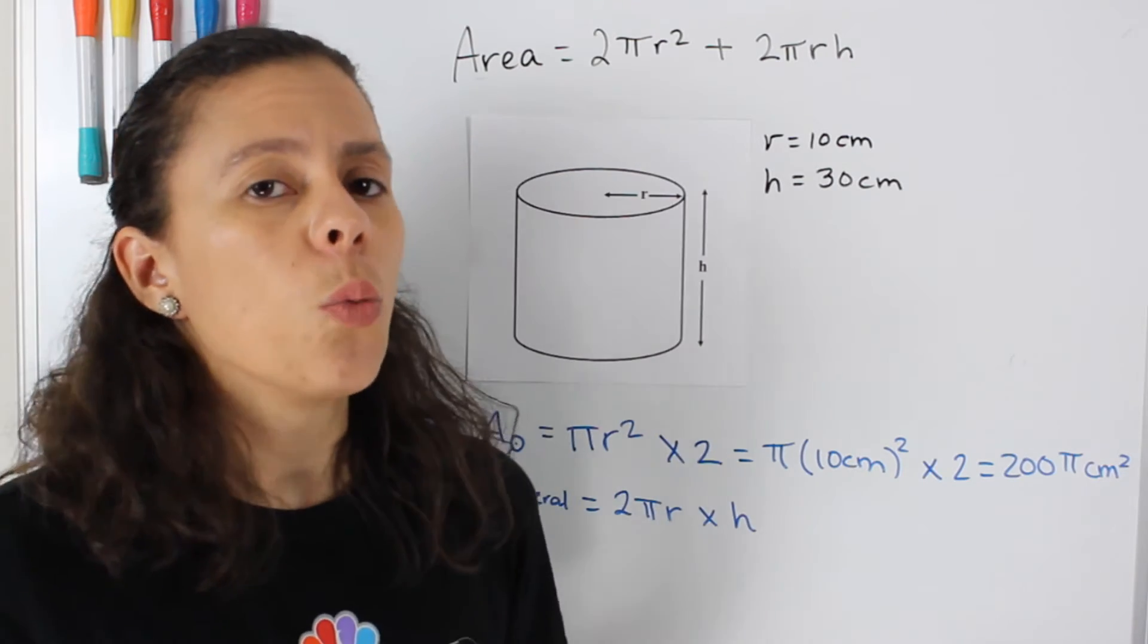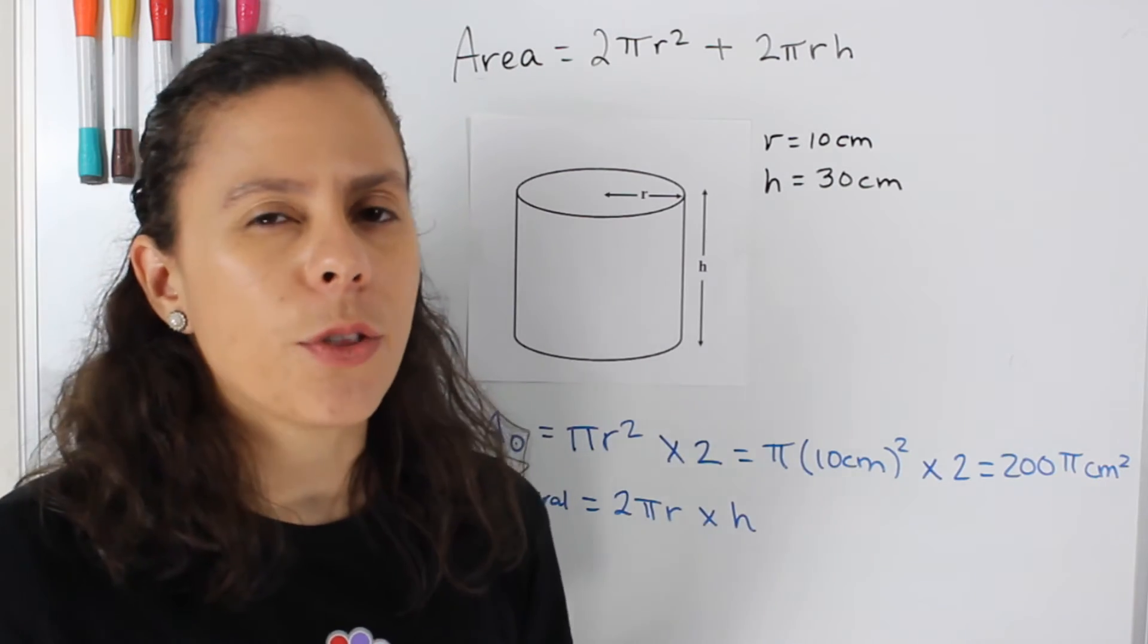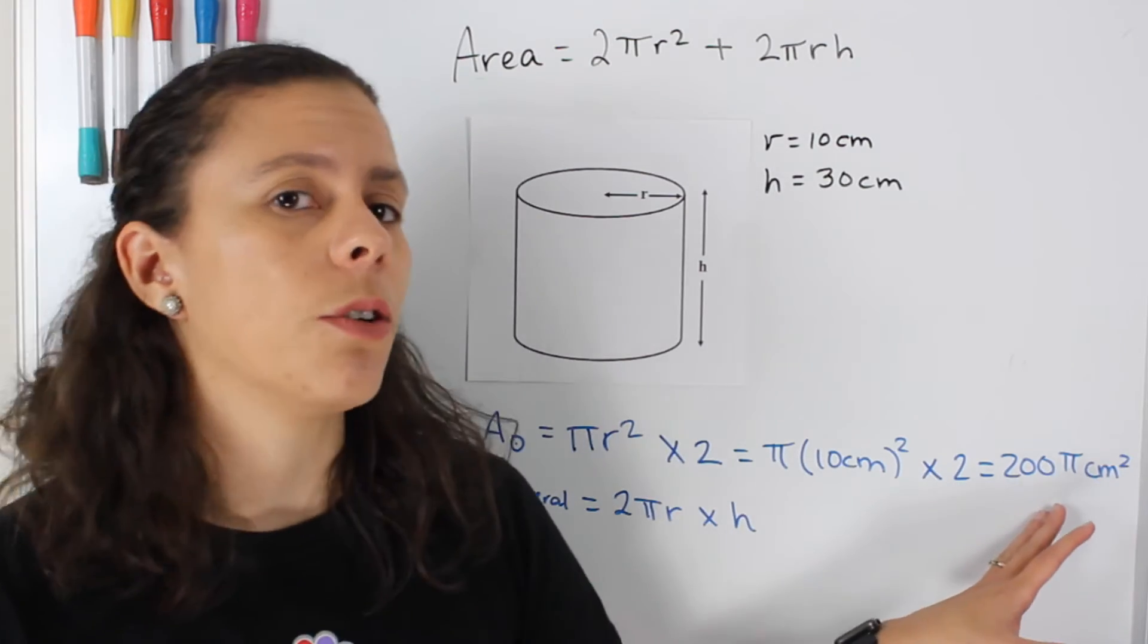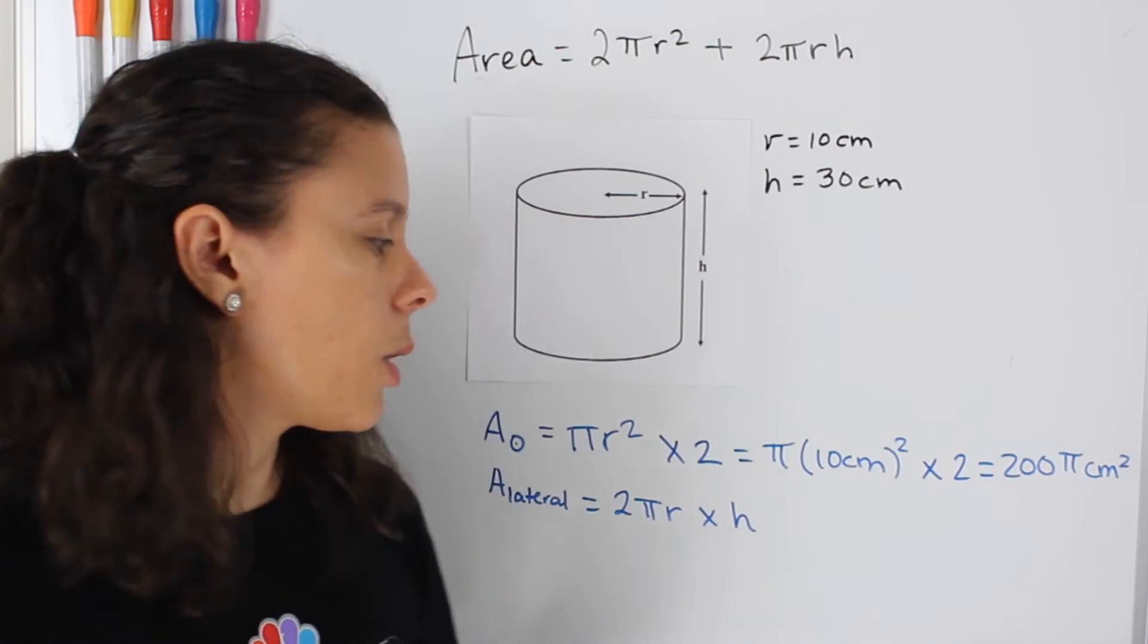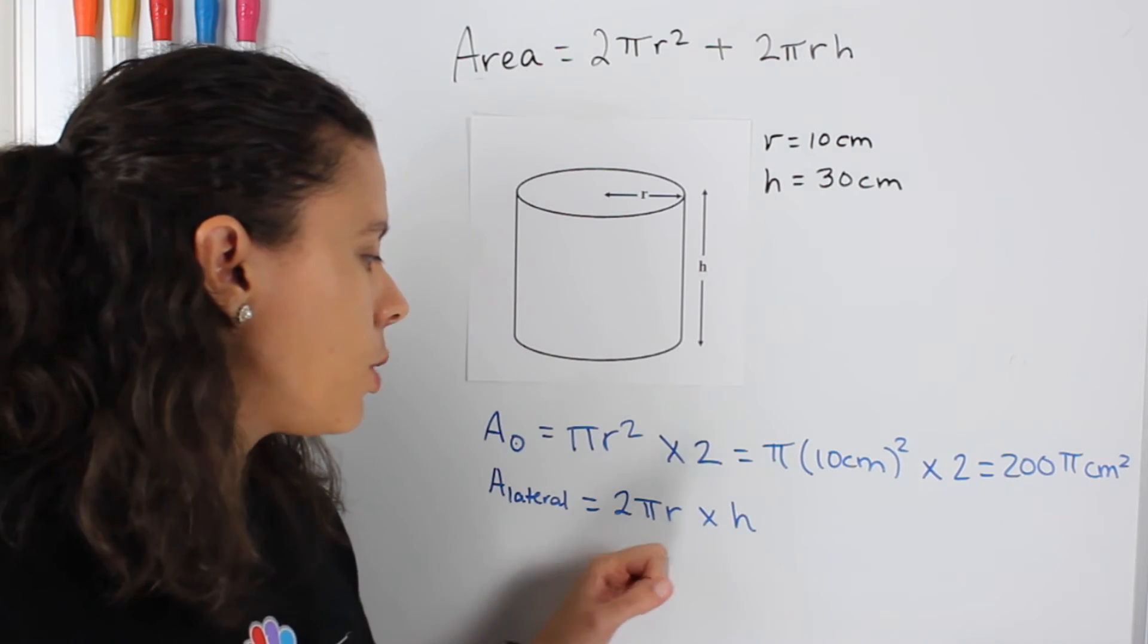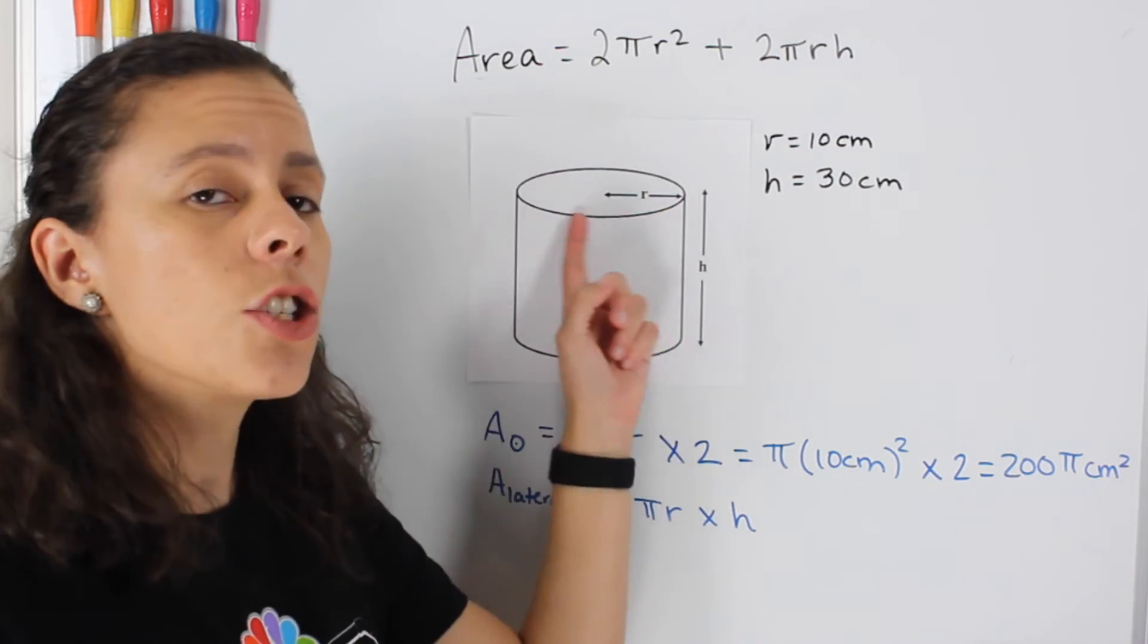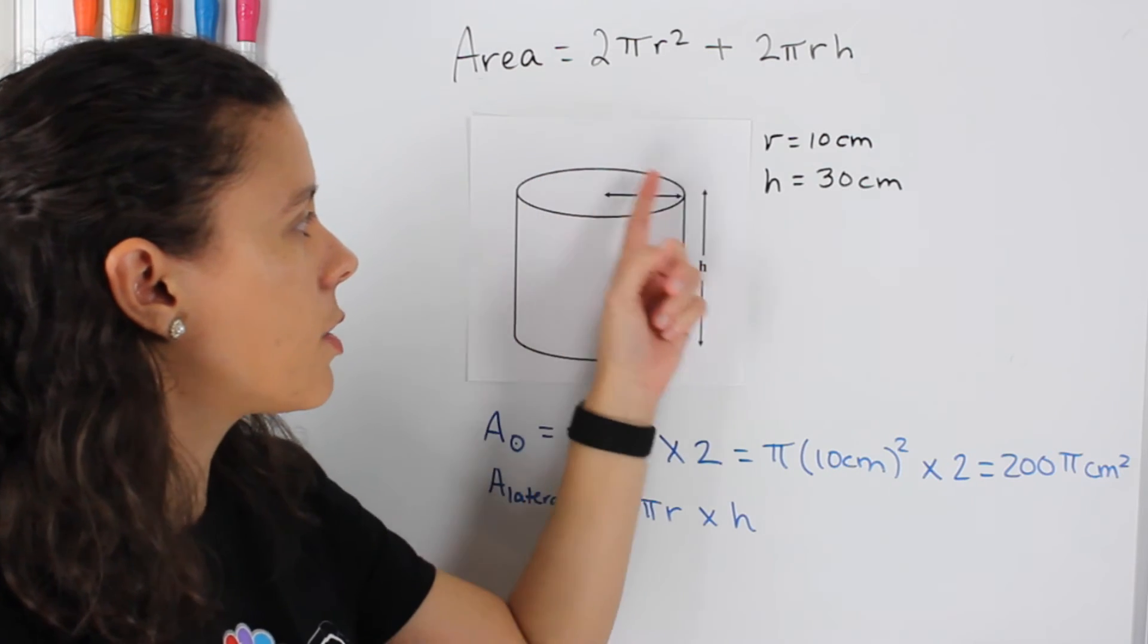And that would be equal to 200 pi centimeters squared. Now, most of the time, we are going to substitute the pi for 3.14. But for the sake of this video, I just want to leave it expressed in terms of pi. So for the lateral area, what I'm going to do is I'm going to multiply 2 times pi times the radius of the circle, because that is the circumference of the circle,